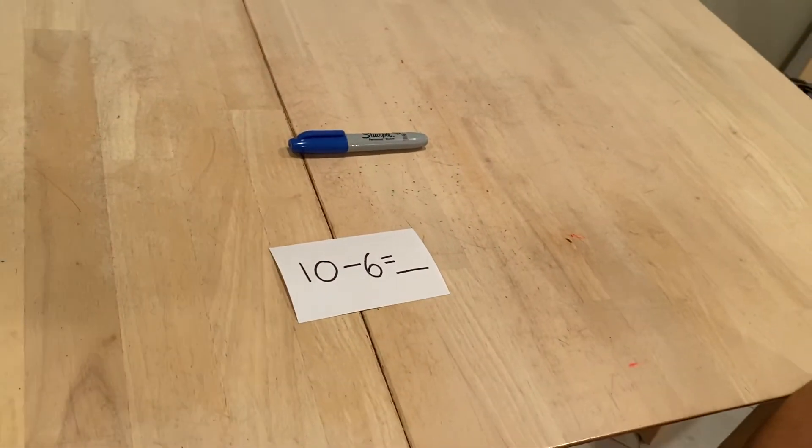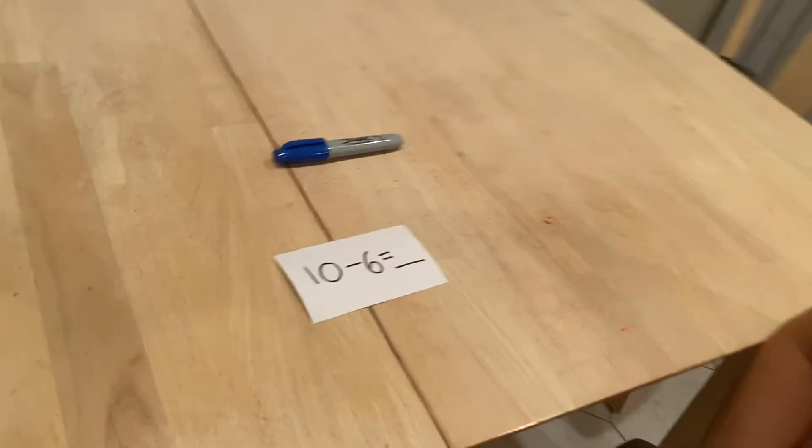To use the count back strategy, you're going to put the large number on your brain. The large number was 10, so I'm going to put 10 on my brain. Then I'm going to use my fingers to put up the small number, which was 6.